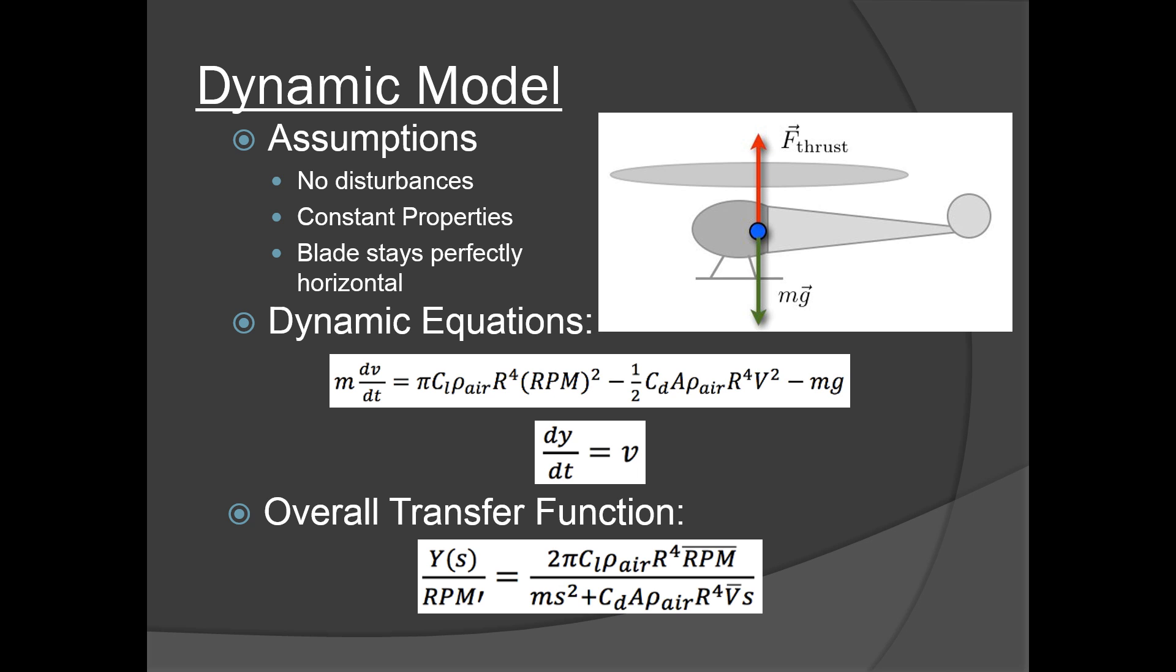So the first step in developing this model was finding a way to relate rotations per minute of the rotor to the force of lift. Having that and taking into account the force of drag and the effects of gravity, we were able to relate those to velocity and the velocity to the height. Combining that all together, we were able to get a good transfer function that when you input RPMs, you could get out a certain climb from your helicopter.